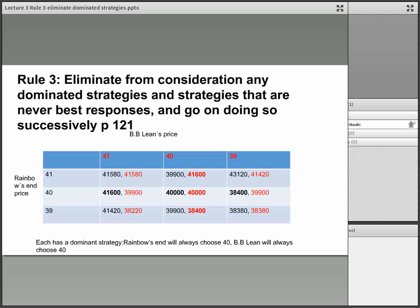And what do you end up with when you have eliminated these rows and columns? You end up with something which looks like this. Here, when you look at this, you will notice that actually in all cases, the red BB Lean would choose 40, and in all cases, the black Rainbow's End would also choose 40. So having eliminated all the dominated strategies, at the end of the day, the only rational option would be for BB Lean to have price 40 and Rainbow's End also to have price 40.